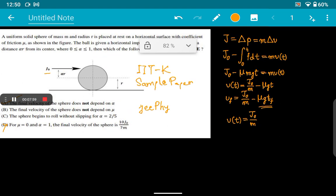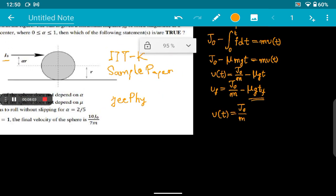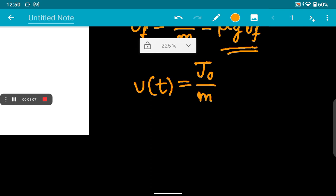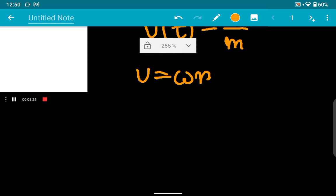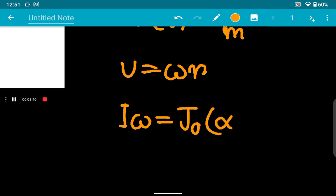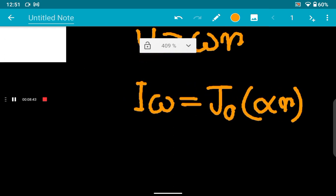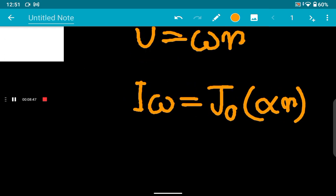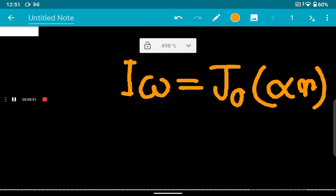Now the last part, which is the C part. For the C part, we will have to use the condition for rolling: v = ωr. We have to do one more equation, and that is basically the angular momentum. Iω—it's the angular momentum. In another way you can write that here J₀ is the applied impulse, so you can also write it's J₀ into αr. This is also a form of the angular momentum. Here, this is Icm into ω.